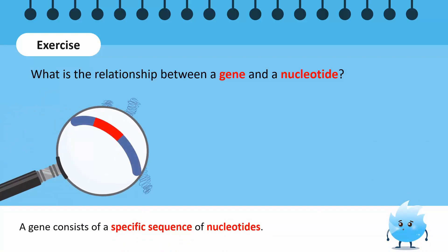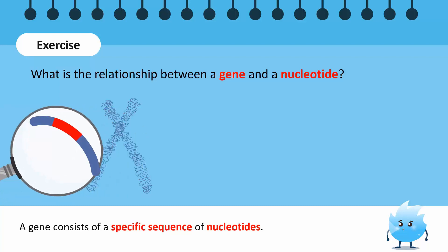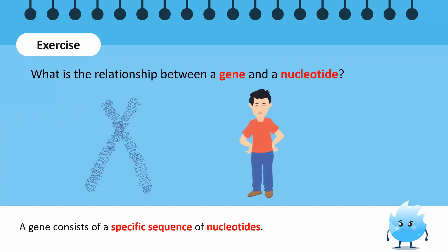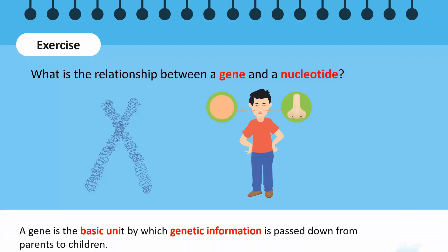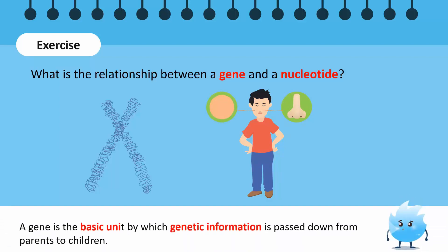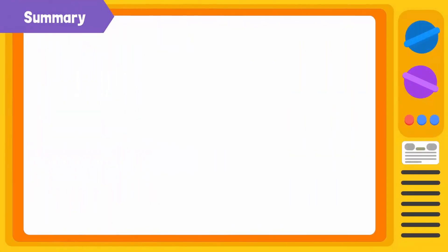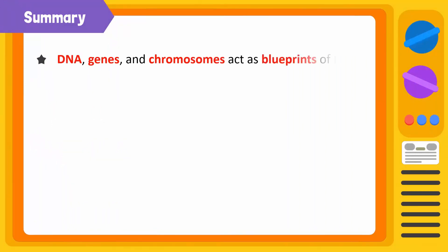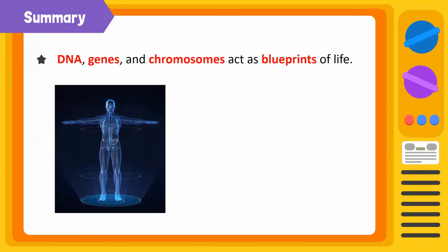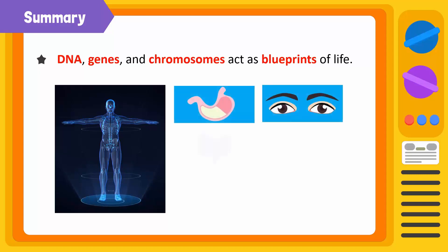So, a gene is made up of a specific sequence of nucleotides. Each gene occupies a specific position on a chromosome that helps determine the different characteristics of an individual, such as the shape of his nose or the color of his skin. In other words, a gene is the basic unit by which genetic information is passed down from parents to children. Let's summarize. DNA, genes, and chromosomes act as the blueprints of life. They are the plans that tell the body how to create everything inside it, from specific molecules to entire organs.